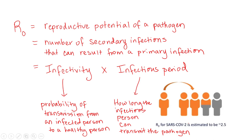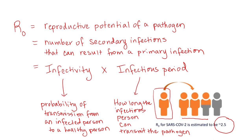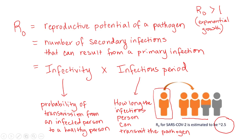For COVID-19, the best estimation right now is an R naught of around 2.5. That means one sick person can transmit to approximately two and a half healthy people and infect them, and each of those would go on to infect two and a half more. The general rule is that if R naught is greater than one, we see exponential growth of the infection — which is what we're seeing now. If you can get R naught below one, the disease goes extinct.